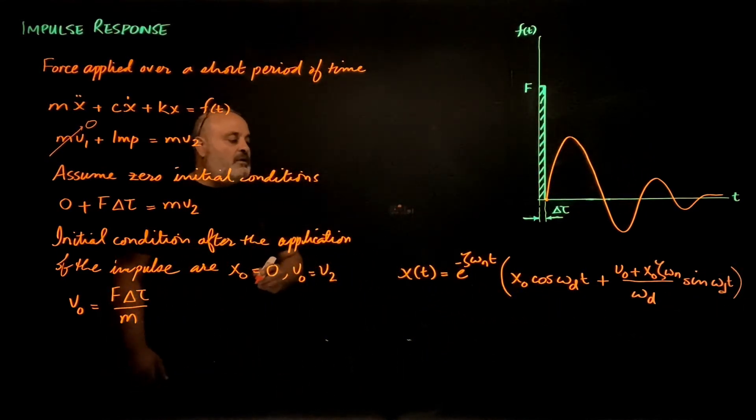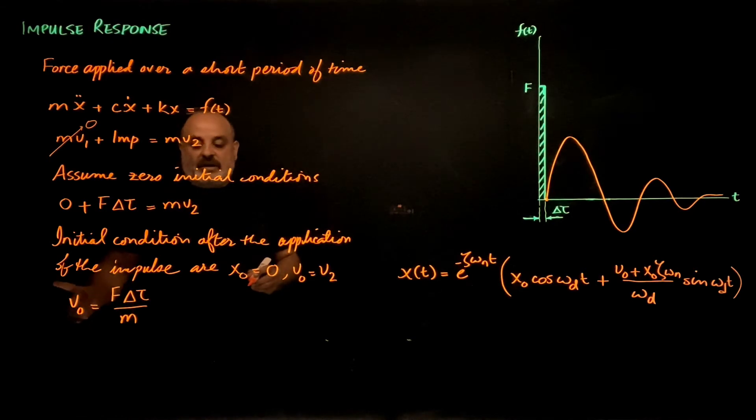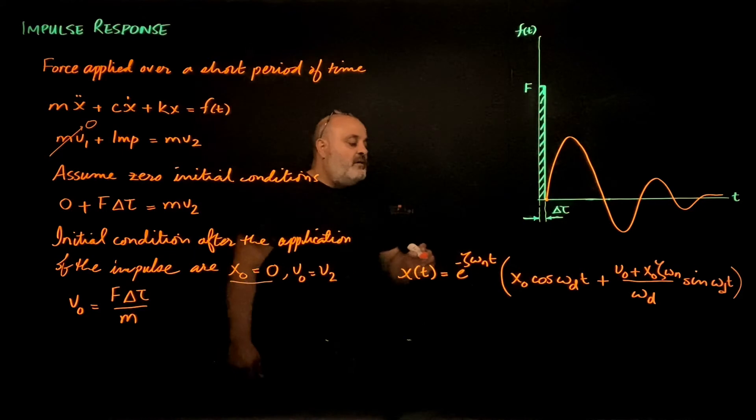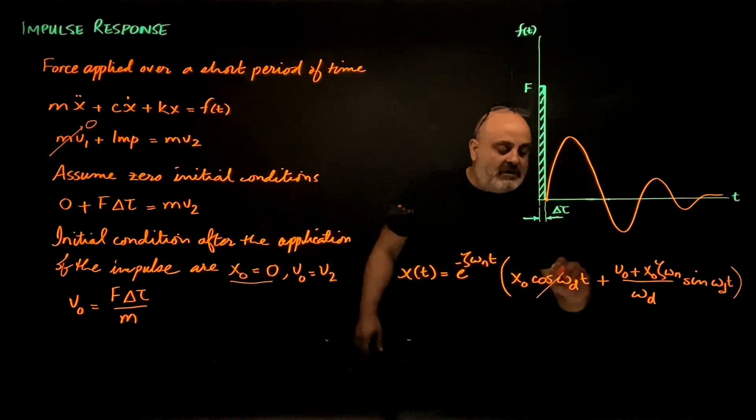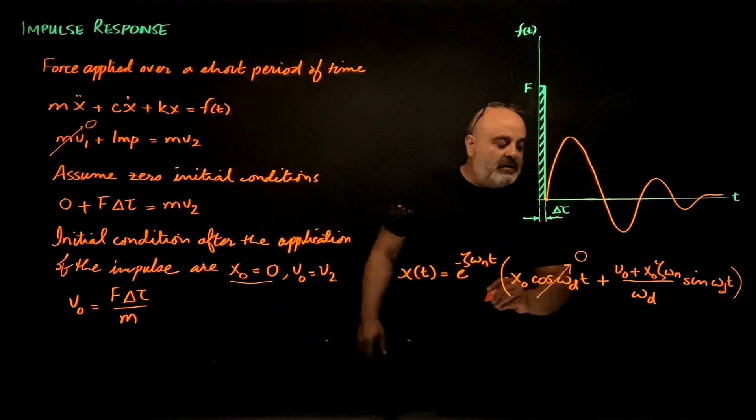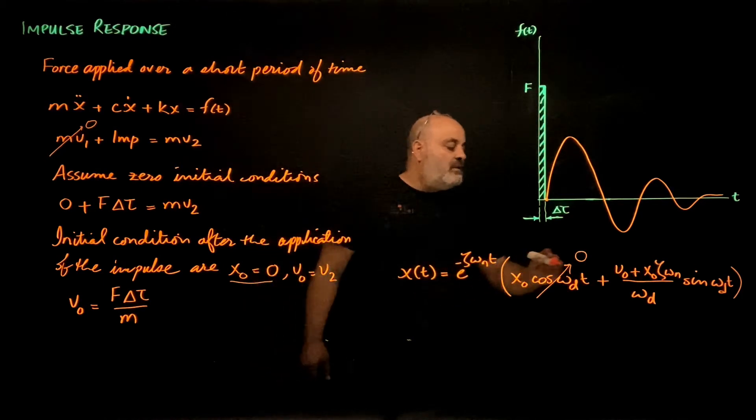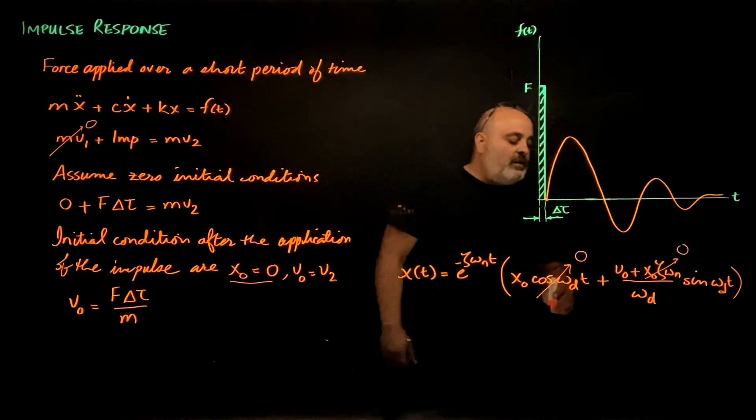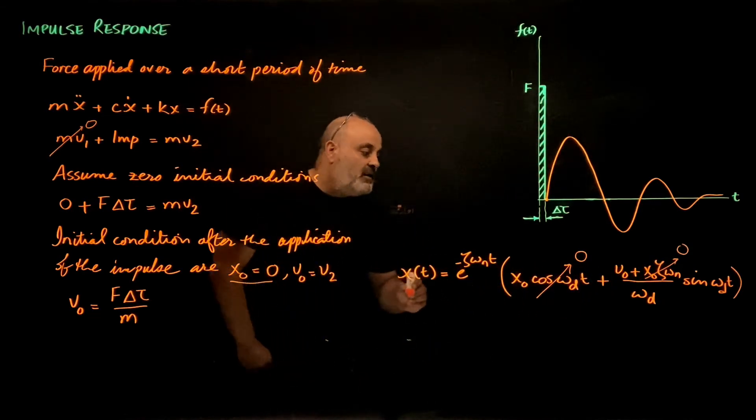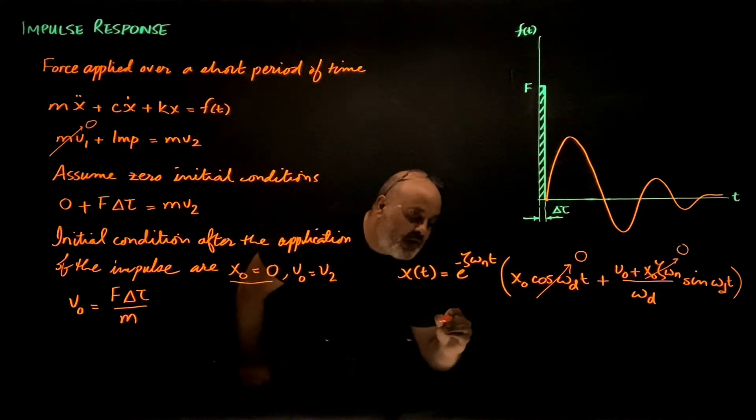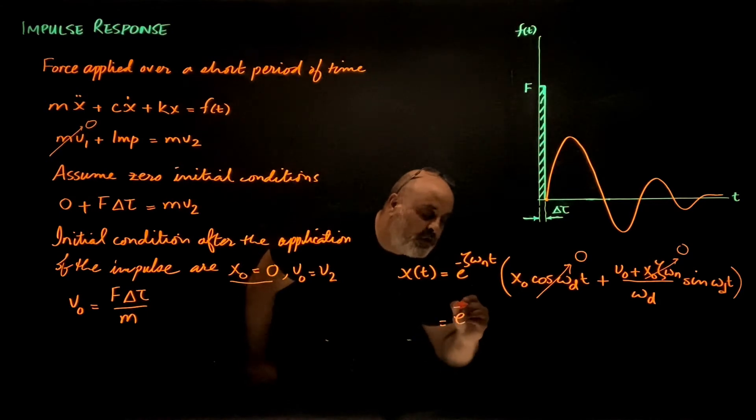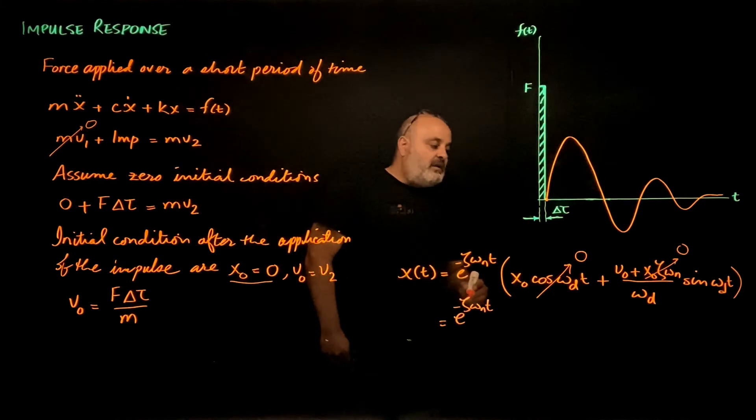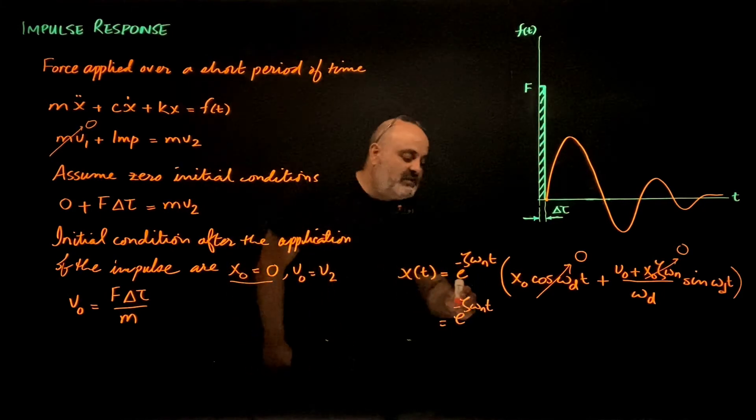So now if the initial conditions are x0 is zero, then this term is zero and this term in the numerator is zero. So I'll end up with just e to the power negative zeta omega n t times v0 divided by omega d times sine omega d t.